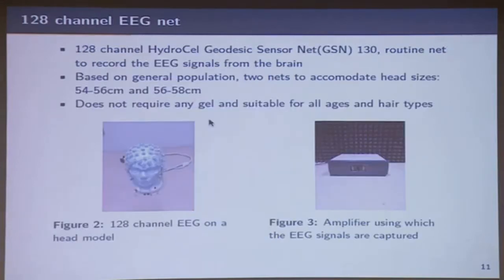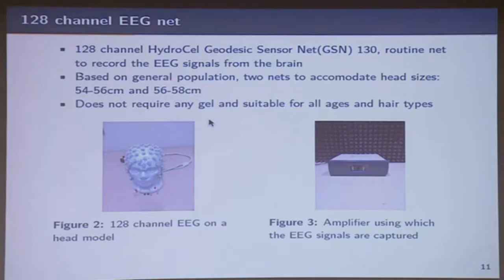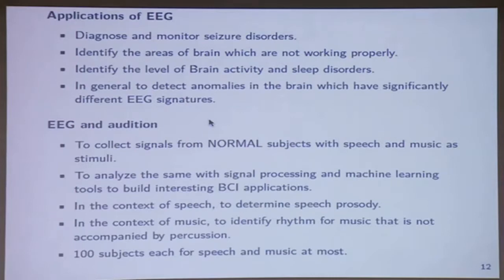This is a picture of the EEG helmet on a mannequin. There is an amplifier which amplifies the EEG signals that are captured. We have got two nets and also purchased a third net. Depending upon head size, you have to use the appropriate net — there's nothing like a general pre-sized t-shirt for the nets, because it's required that you do not have large impedance where the signal cannot be measured.